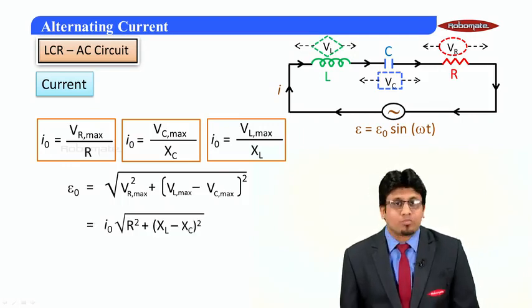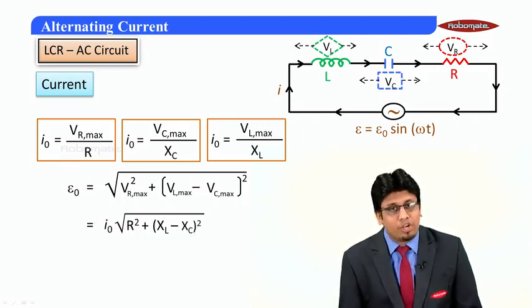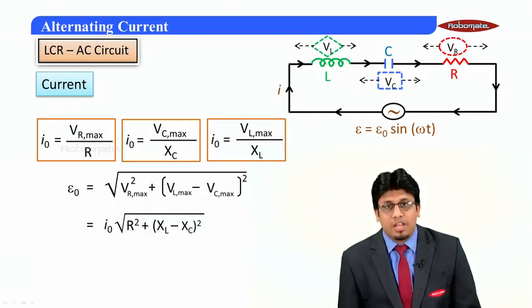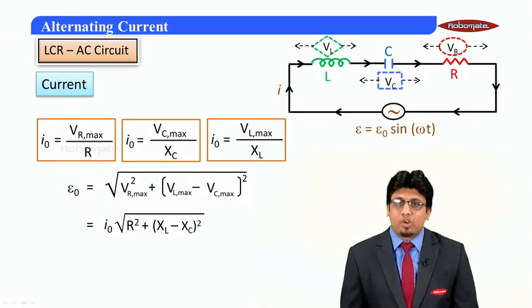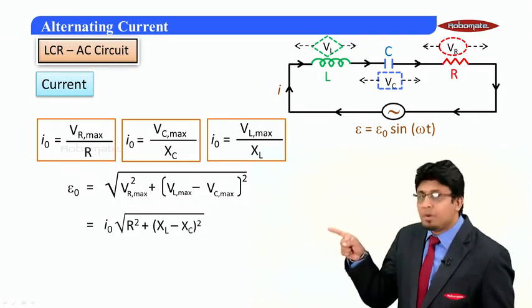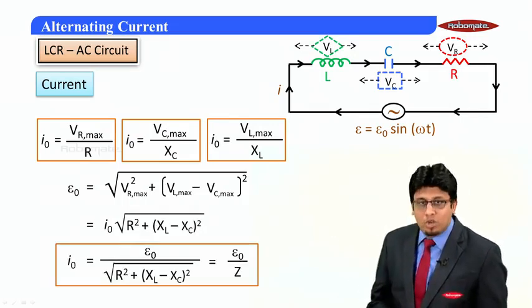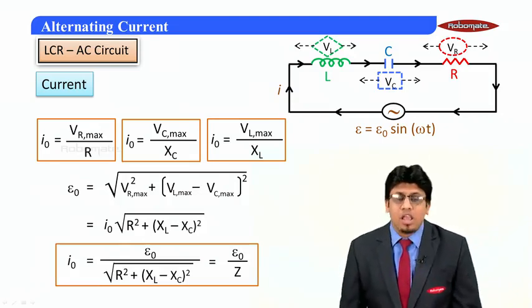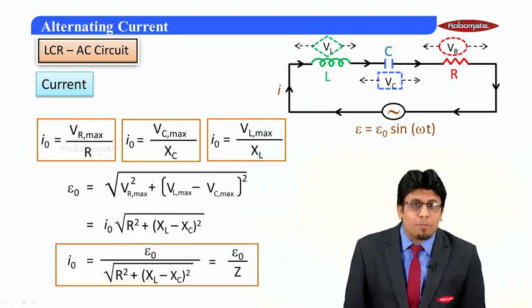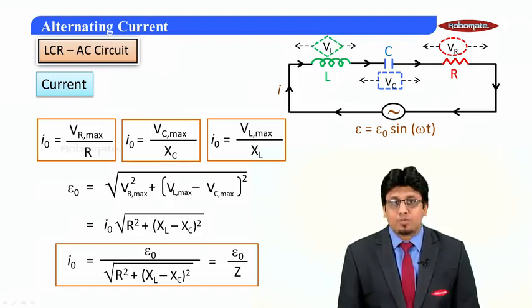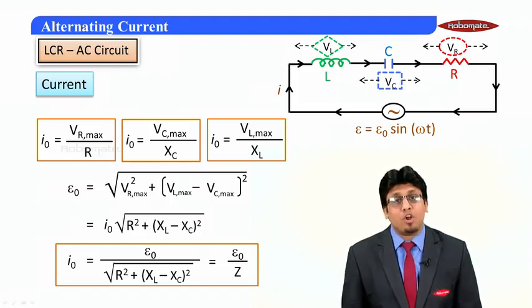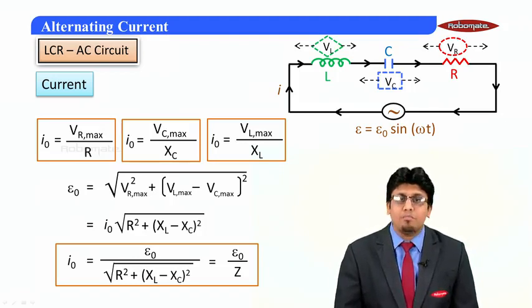And therefore ε₀ will be equal to √(VR² + (VL - VC)²), which then can be written as I₀√(R² + (XL - Xc)²). Taking I₀ common we get this particular value, and on simplification we can write down I₀ = E₀/Z, which basically is what we have discussed earlier that Ohm's law is applicable on impedance.